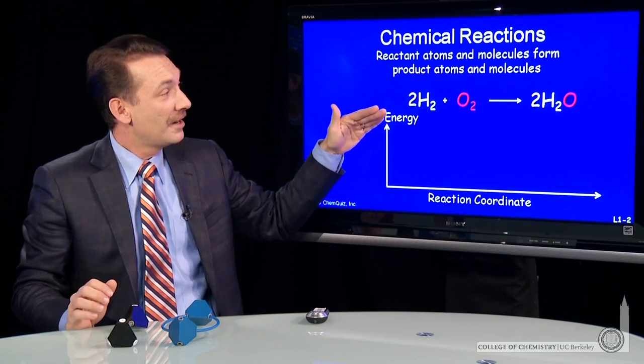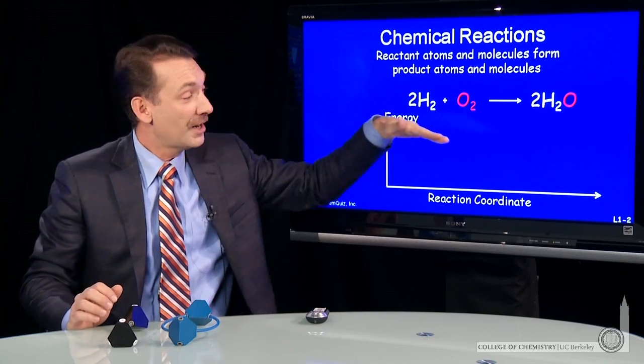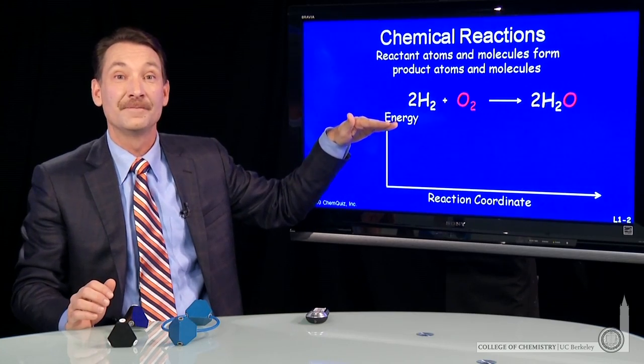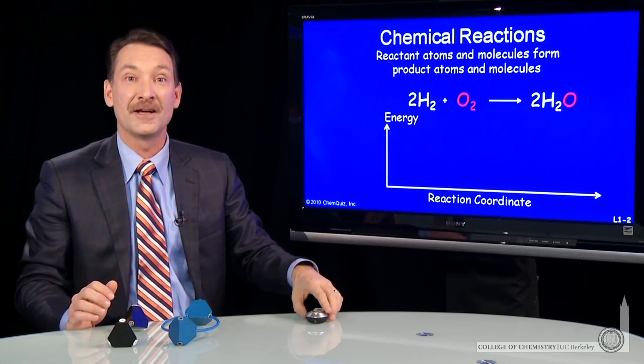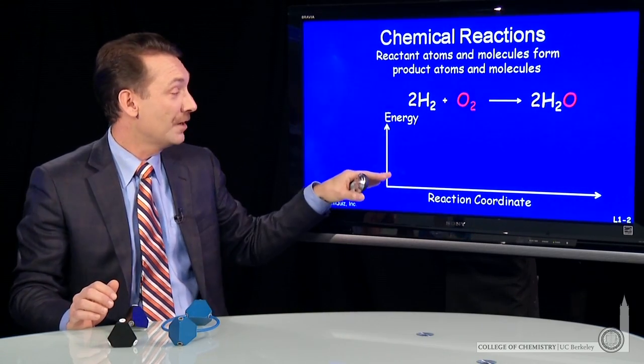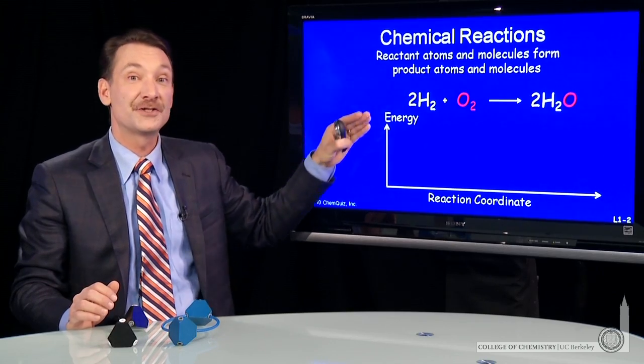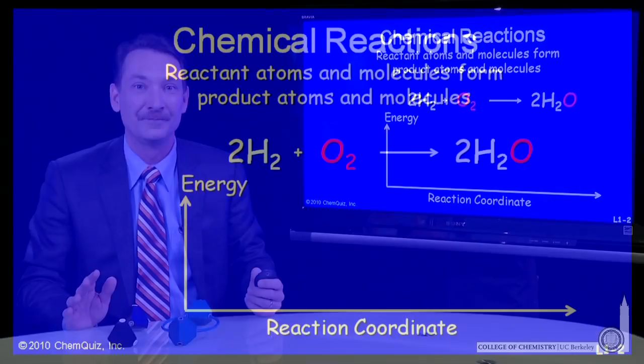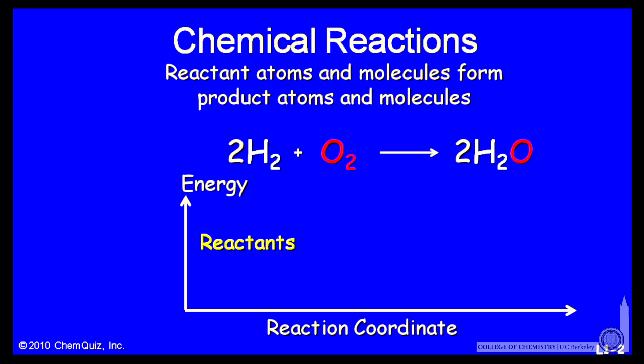So in a sense, the products, water, are lower in energy than the reactants. And we can plot that on a relative scale. We'll do this a lot in chemistry. We'll plot energy on a vertical scale and the progress of a reaction along the horizontal scale. So in this case, it would look something like this: the reactants at a given energy and the products downhill at a lower energy.